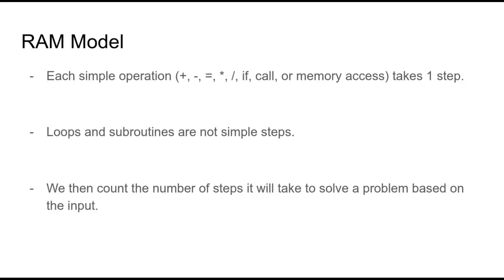One way to do it is using the RAM model. The RAM model says that you will take each operation inside the algorithm and count them as one step. There are operations that are considered complex, like loops and subroutines, and you don't count them directly. If you have a for loop with certain steps inside, you will count each of the steps per every iteration. That way, at the end, you can understand how many operations one algorithm has against another based on the number of inputs.